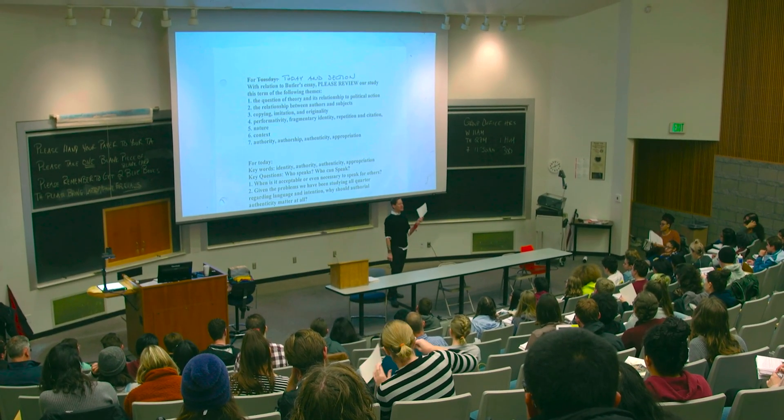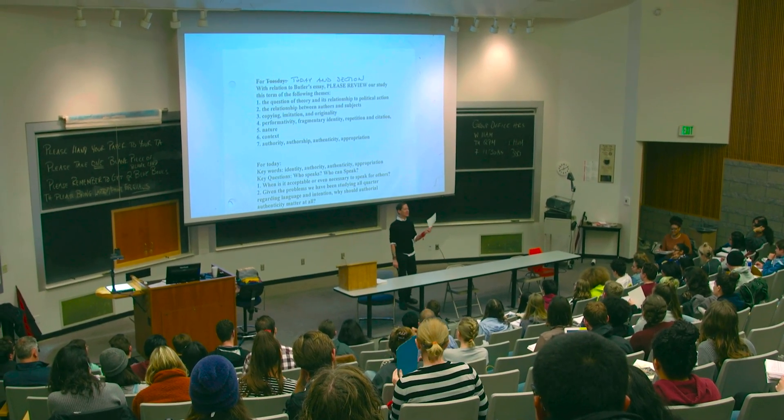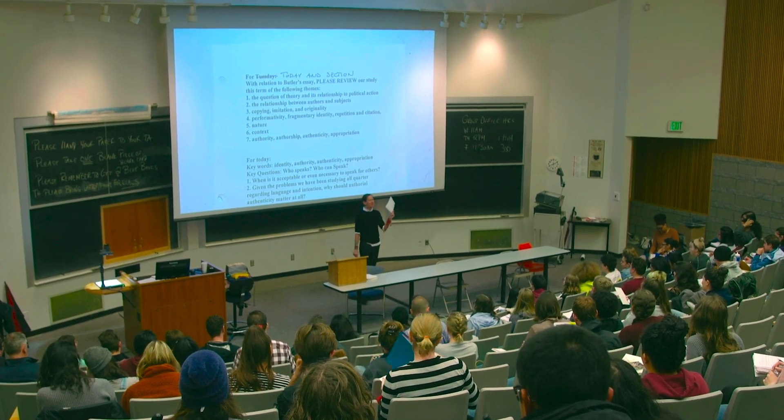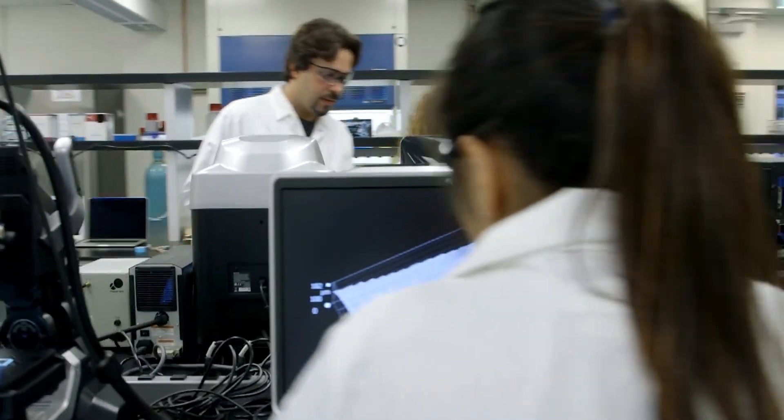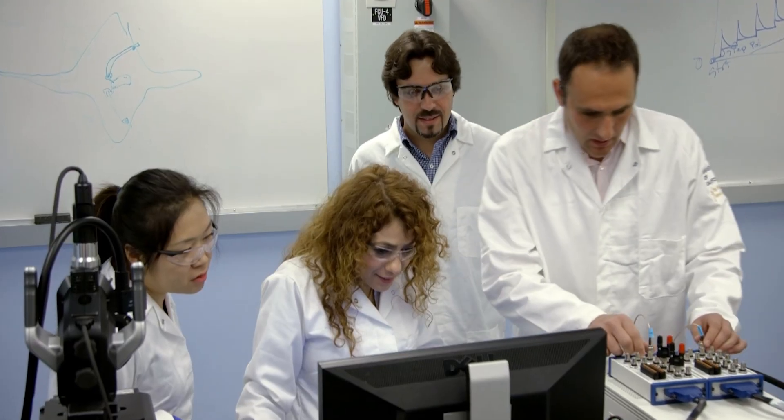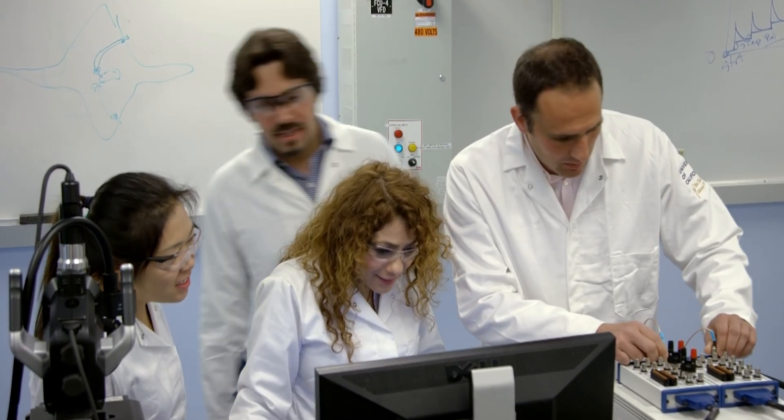I'm here today to tell you about our new degrees in Global and Community Health. There are two — a BA and a BS. The BA takes you on a journey through the social sciences and the humanities to get a Bachelor's of Arts in Global and Community Health. And the BS takes you through at least two different pathways through the natural sciences to a Bachelor's of Science in Global and Community Health.